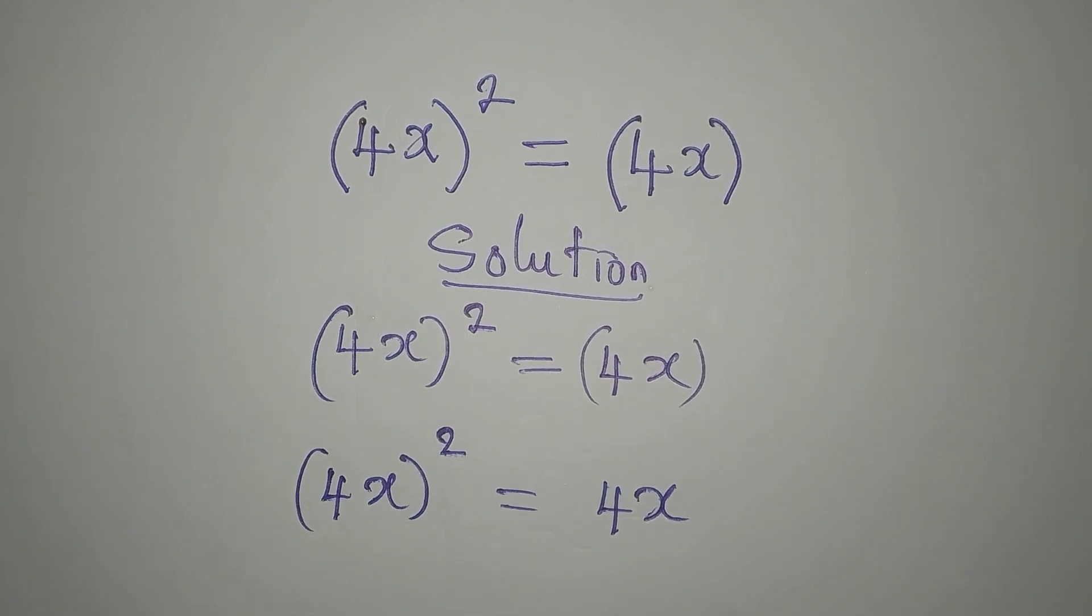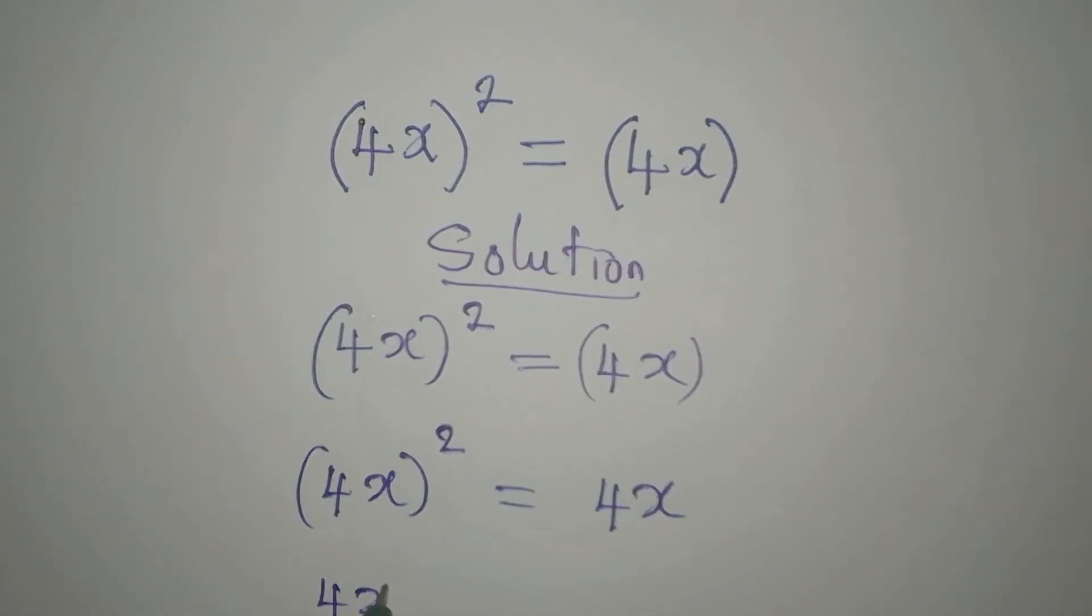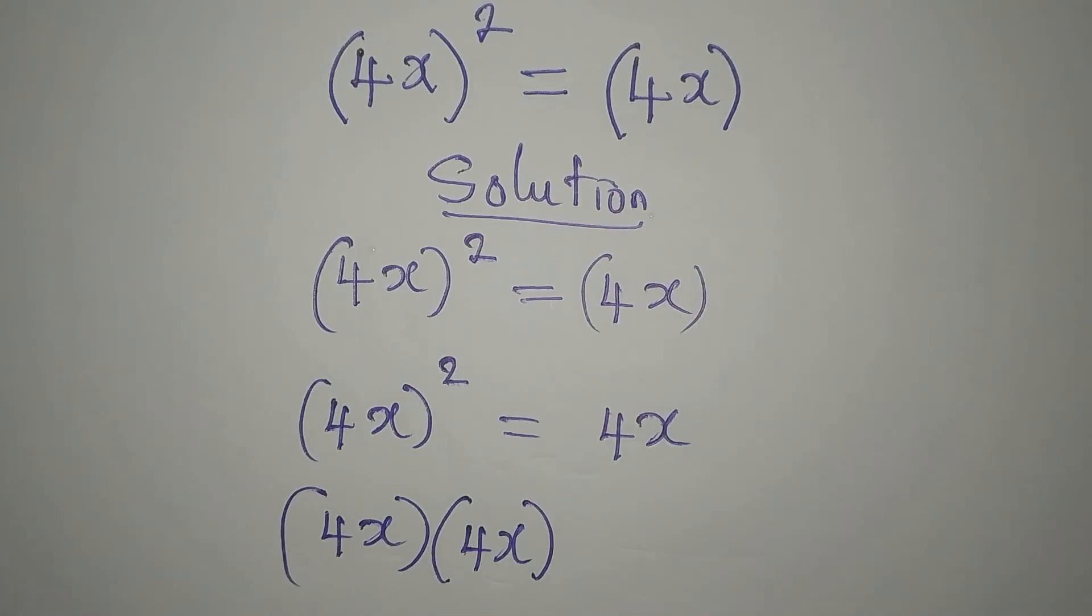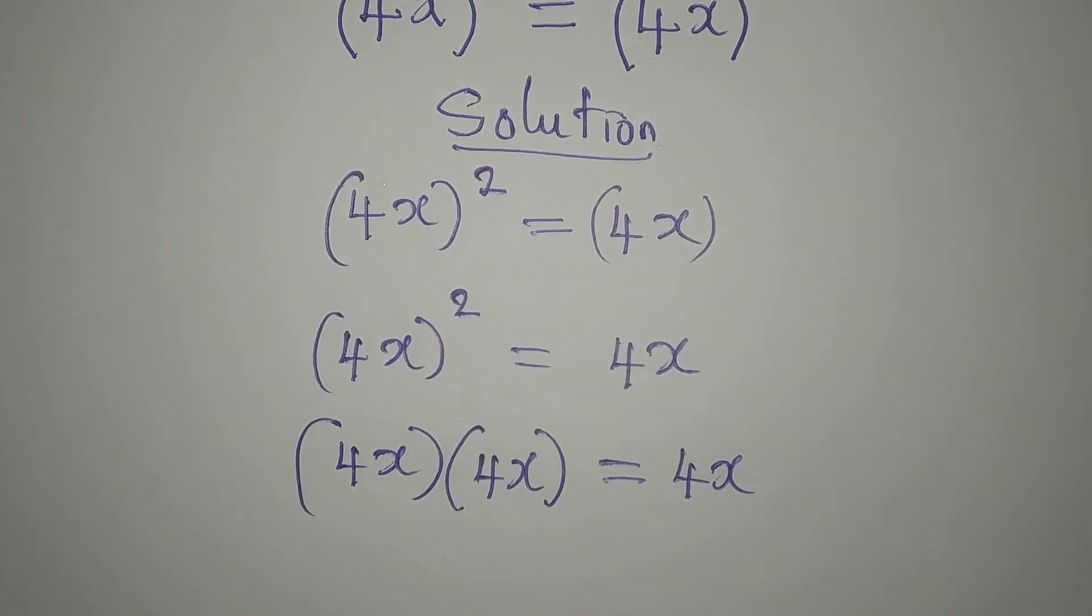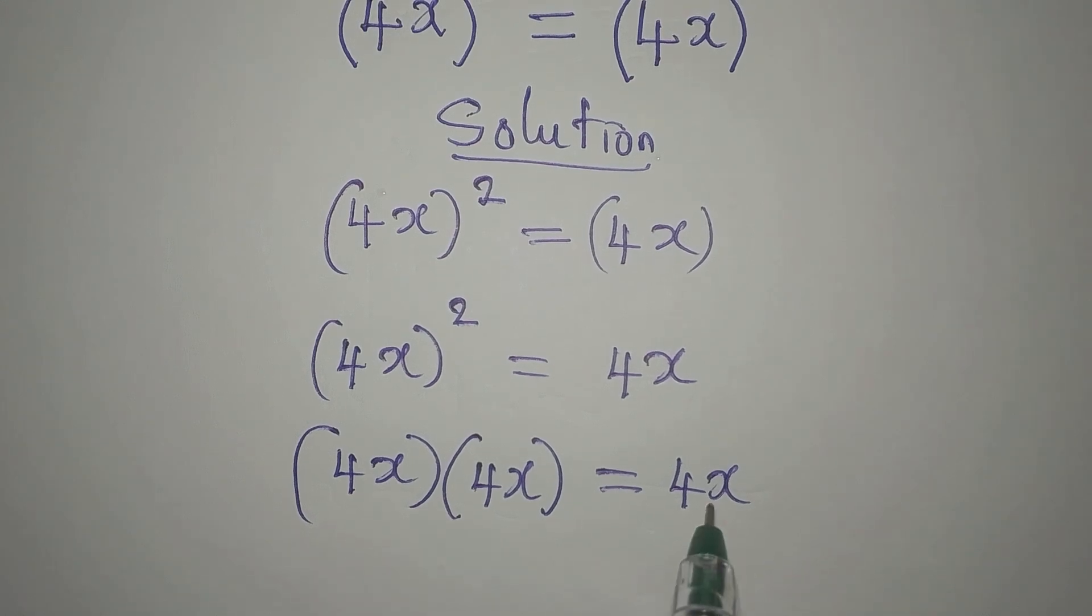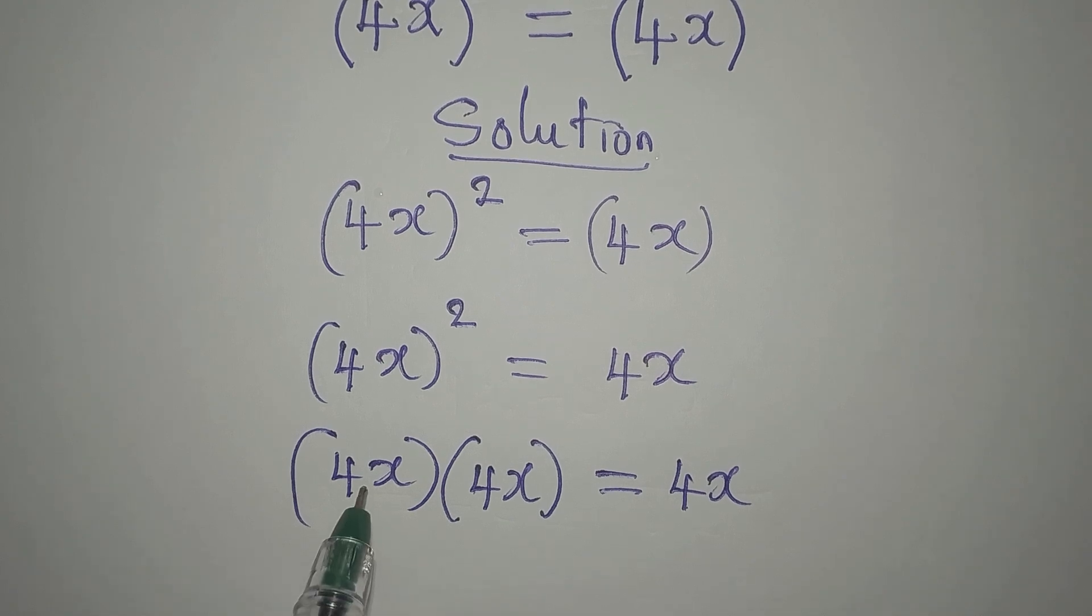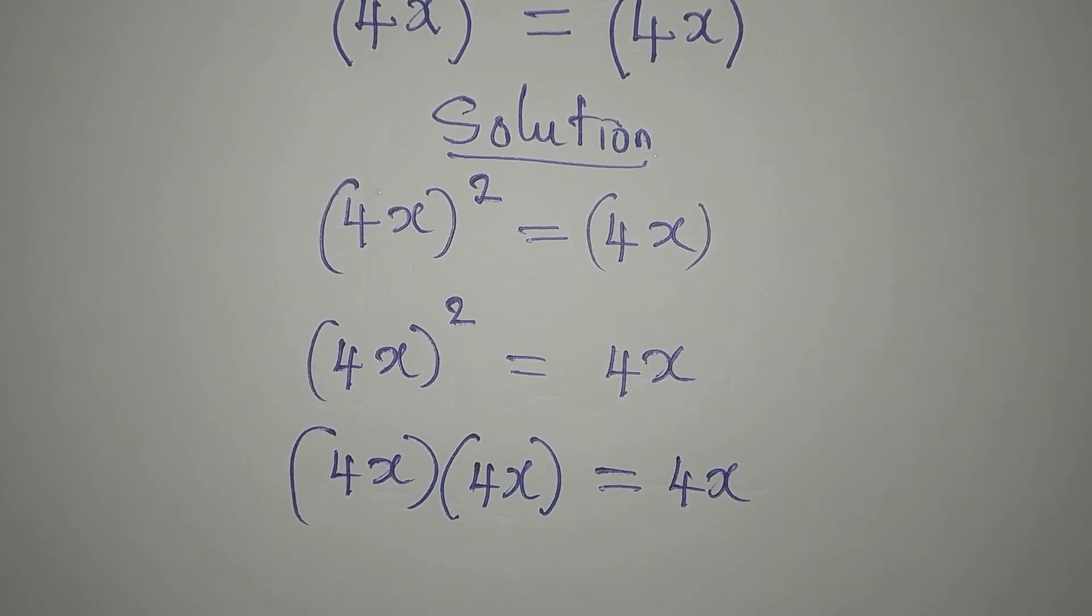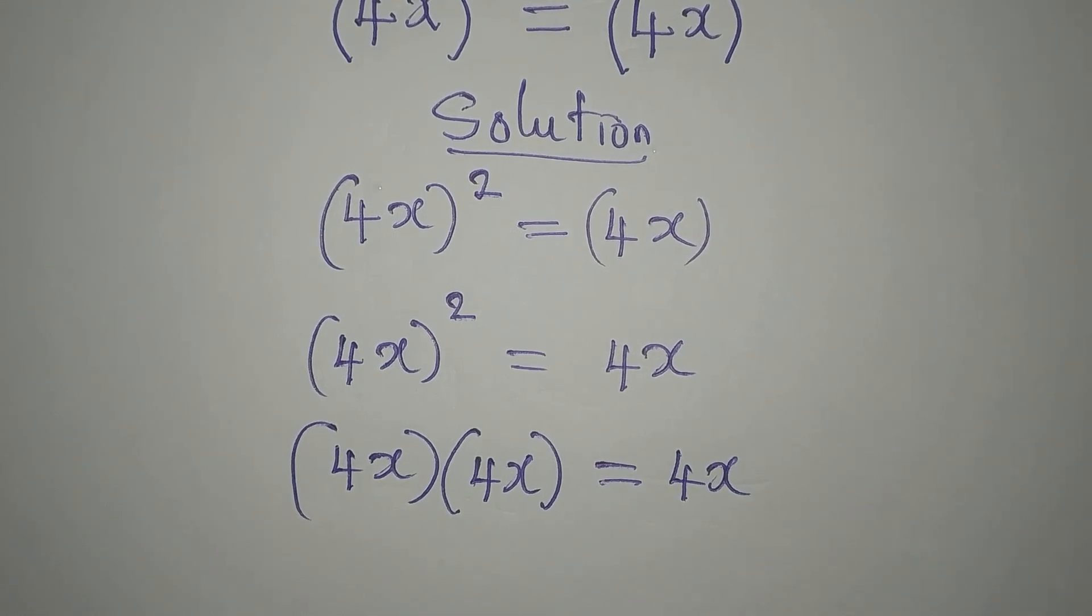What you should do is expand this. (4x)² is the same as (4x)(4x), which equals 4x. Now we have 4x on both sides. If you divide both sides by 4x, it will cancel out, but that will not give you a complete solution, though it might be partially correct.